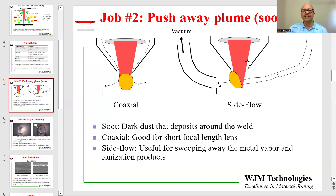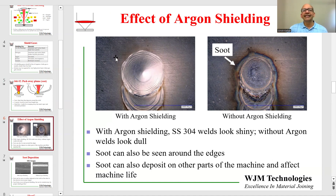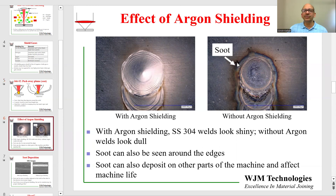Those are the two choices for removing soot from the weld zone. If you don't remove it, the visual appearance may not be acceptable. Here I'm showing two examples of spot seam welds. The example made with shielding gas shows a very clean weld. The example made without shielding gas shows an oxidized weld zone, with a darker ring around the weld where soot has deposited.